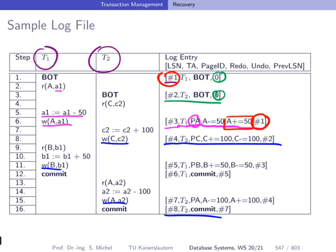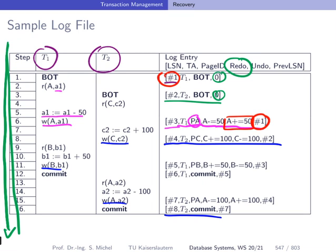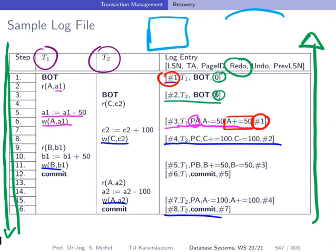During recovery, we look at the log file to see which transactions committed — we call these winners — and which did not commit — we call these losers. For winners, we must ensure their changes are durably stored. For losers, we must revert their changes. We walk through the log to identify winners and losers, then do a forward pass from beginning to end redoing the information stored in the log entries, and then go back from end to front applying the undo information for loser transactions.